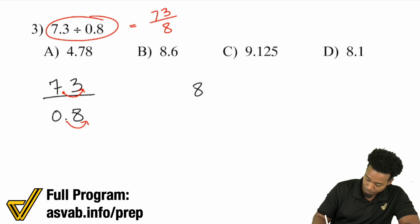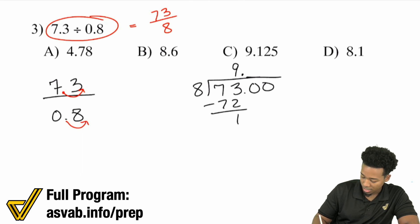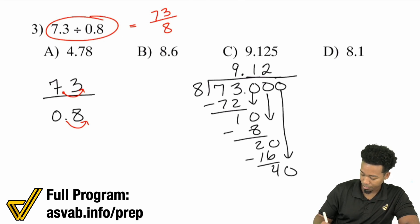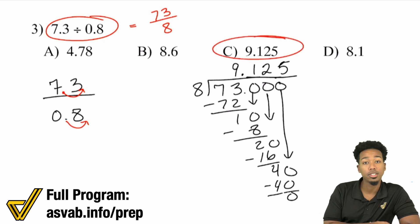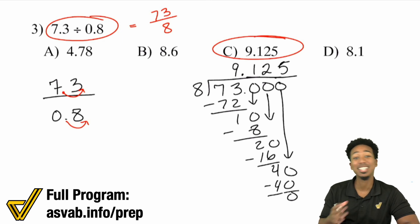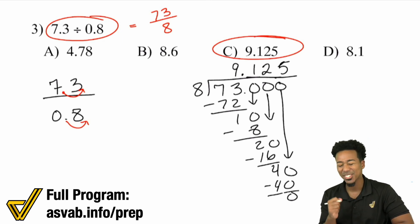So this becomes 73 divided by 8. And now you can put in the work. 8 goes into 7, 0 times. 8 goes into 73, that's 9 times because 8 times 9 is 72. Put that decimal where it belongs. 8 goes into 10 one time. You got 2 left. 8 goes into 20, that's 2 times. Subtract the 16 to get 4. Bring another zero. 8 goes into 40, 5 times. So 9.125 is your answer and you're done.